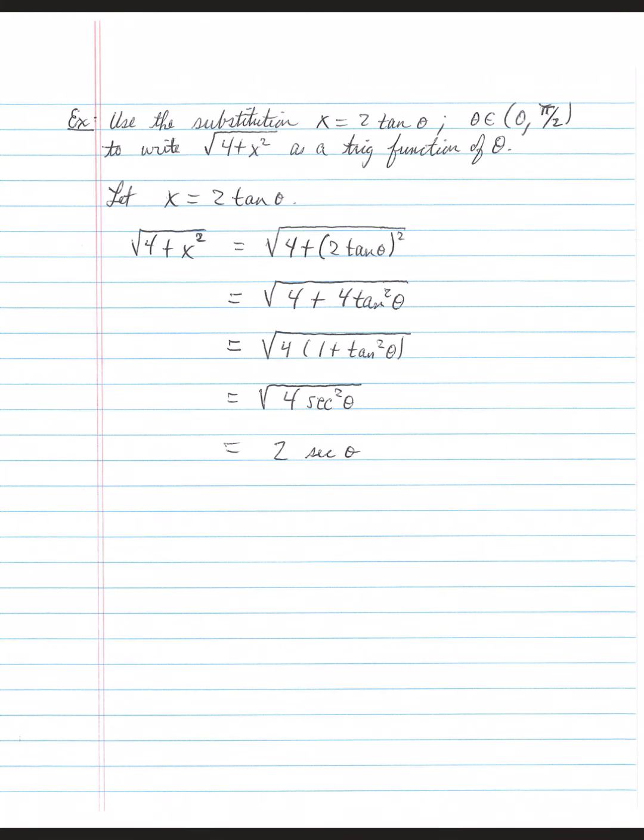From your Pythagorean identities, which one can we use to rewrite 1 + tan²θ? Correct, 1 + tan²θ is equal to sec²θ. Don't forget your 4. And now when you take the square root, square root of 4 is 2, square root of sec²θ is sec θ.